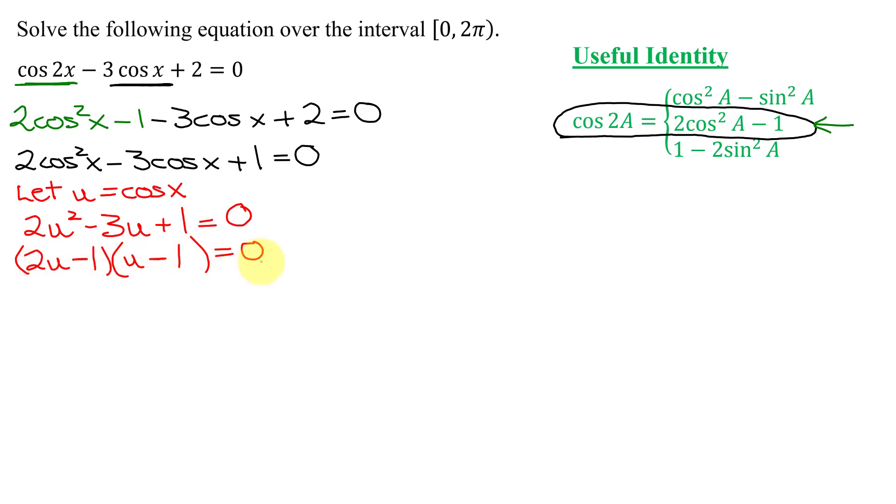So we have two factors multiplied together equals 0. Set each of them equal to 0. So I have 2u minus 1 equals 0. Add 1 to both sides. 2u equals 1. Divide both sides by 2. I have u equals 1 half. Now the second factor, u minus 1 equals 0. Add 1 to both sides. I get u equals positive 1.